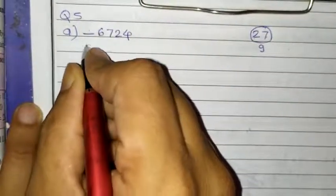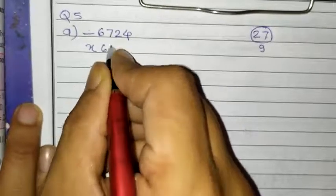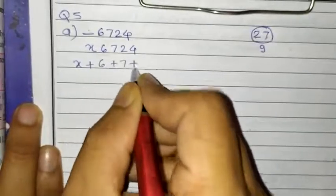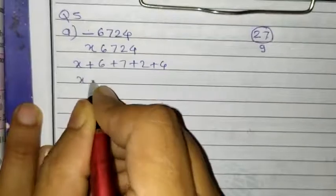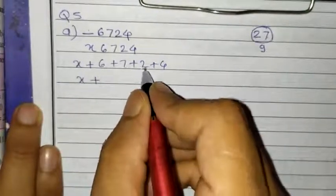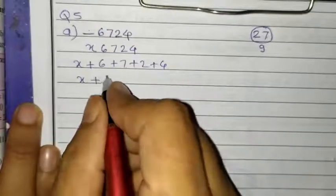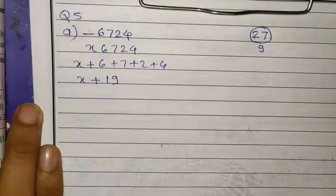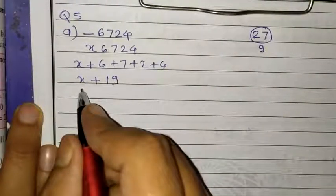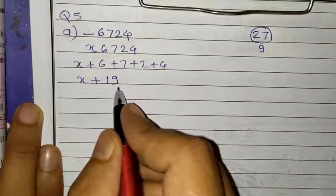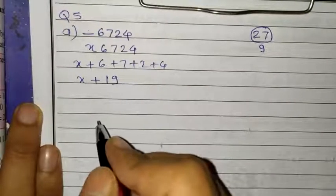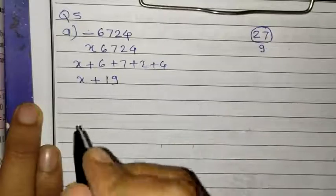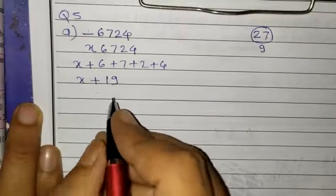We assume the missing number is X. So the number is X6724. We do the addition of every digit: 6 plus 7 is 13, 13 plus 2 is 15, 15 plus 4 is 19. So the sum of the known digits is 19. Now we have to find the missing number. After 19, which number is divisible by 3? If you add 2, it will become 21, and 21 is divisible by 3. So this number X is 2.